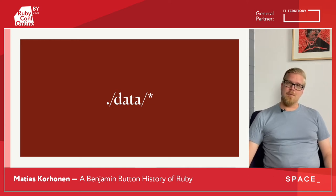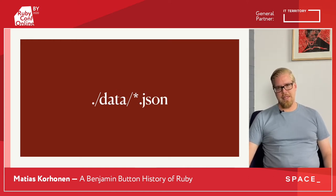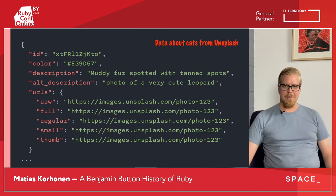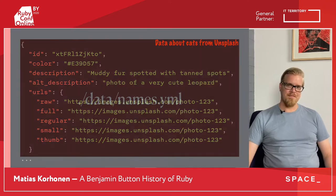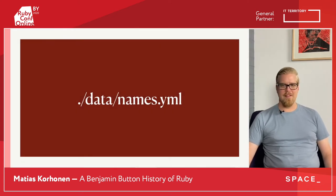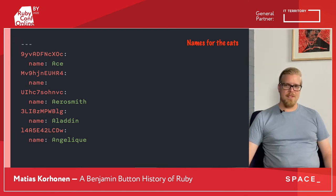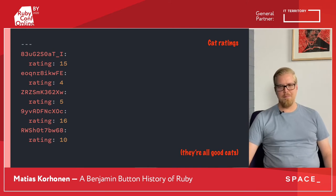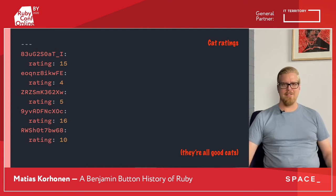First off, let's take a look at what our cat data looks like. We have a whole collection of JSON files, each one describing a single cat. There's an ID, a description, an alternative description, and most importantly, some URLs to cat pictures. There's a separate YAML file full of catty names — it's just hashes of IDs and names. And then we have ratings for the cats, very similar to the names YAML. It's almost as if some sort of madman designed the data storage just to be extra-convoluted with a whole variety of different operations.